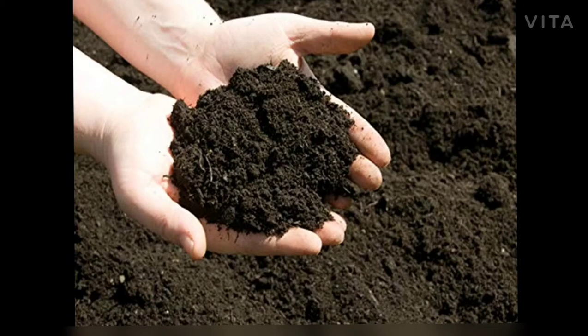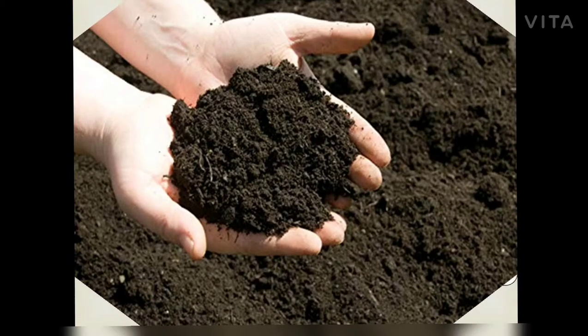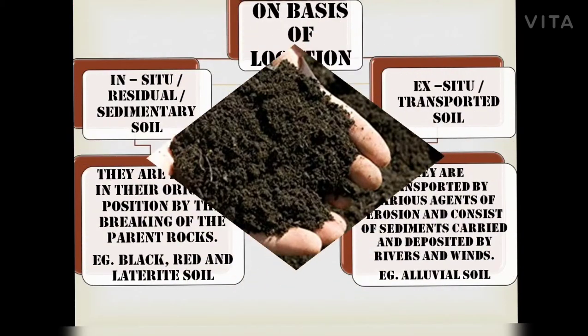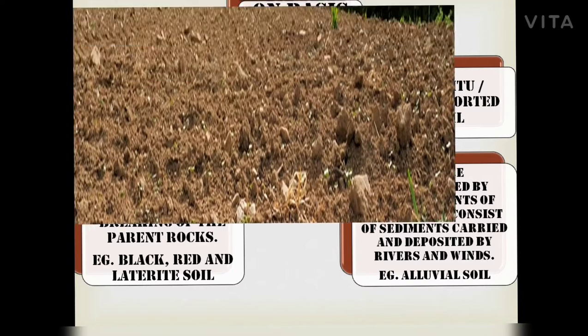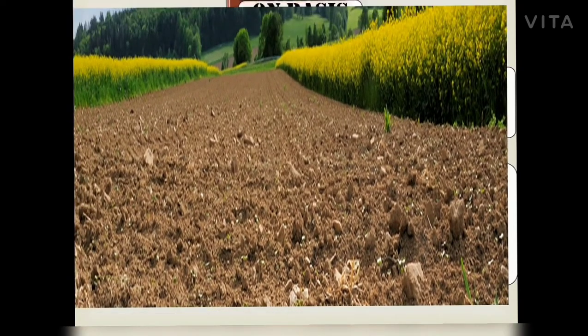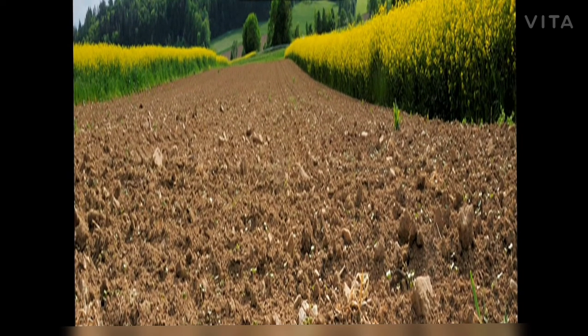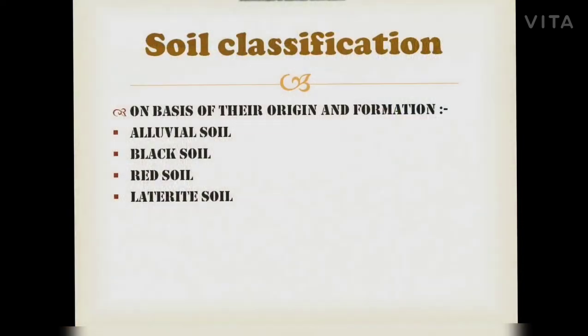Ex-situ soils are transported by agents of erosion and consist of sediments carried and deposited by rivers and winds. An example of ex-situ soil is alluvial soil, as shown in the picture.